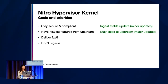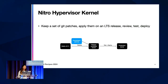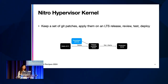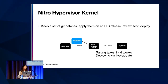To do everything fast, you have to do rebases fast. We pick an LTS release, take our downstream commits, apply them on top, test them, fix any bugs, and then deploy. Testing is fairly well understood: for minor releases it's maybe one to two weeks; for a major upgrade we take at least four weeks for more comprehensive testing.